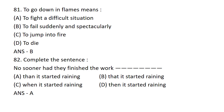To go down in flames means: Option A: Fight a difficult situation. Option B: To fail suddenly and spectacularly. Option C: To jump into fire. Option D: To die. Option B is the correct answer — To fail SUDDENLY AND SPECTACULARLY.